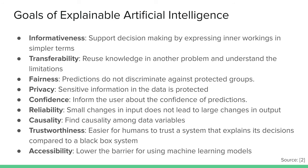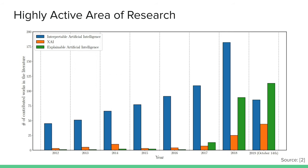Last but not least, accessibility — we would like to lower the barrier for using machine learning models by providing explanations. Artificial intelligence has seen a rise in popularity, and explainable AI has followed suit with a few years behind, but it's becoming more and more popular. Already this year, many papers on this topic come out every week and every month at all the big conferences.